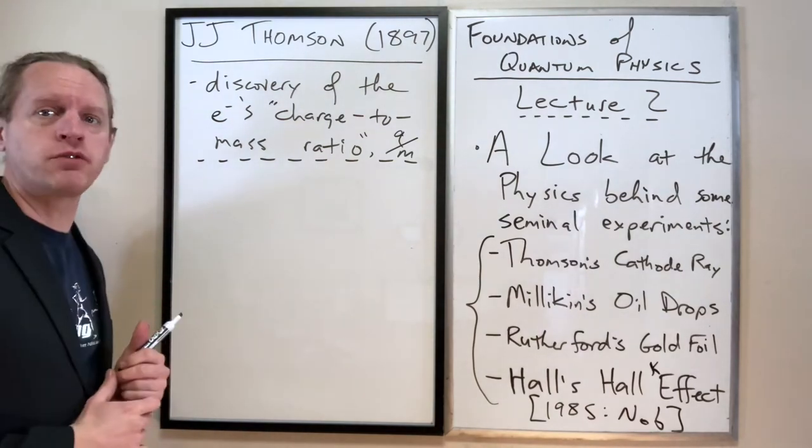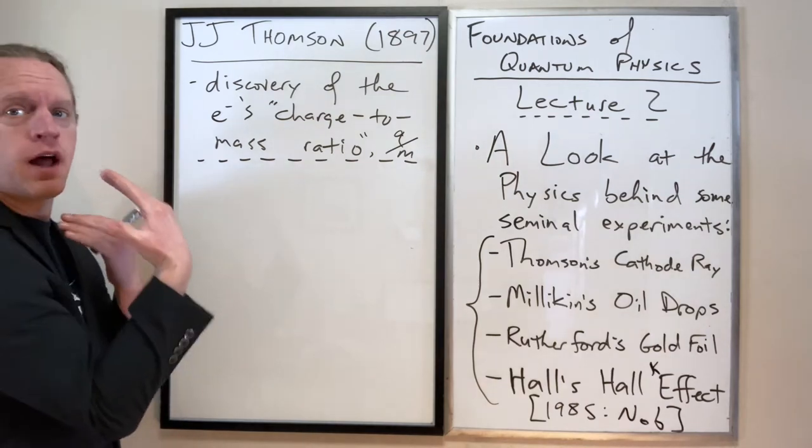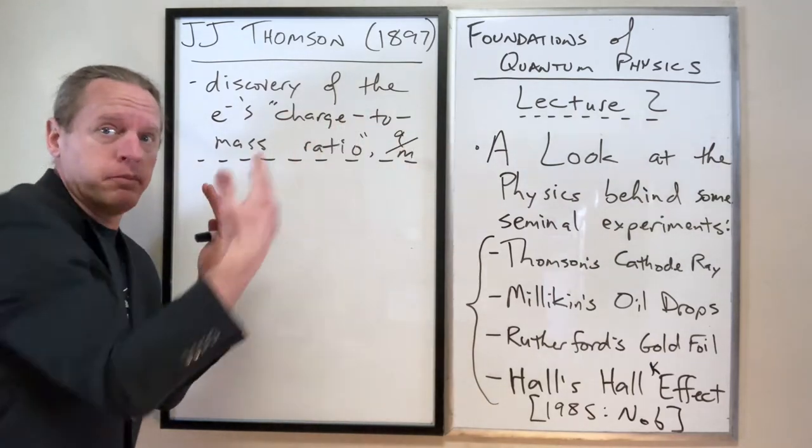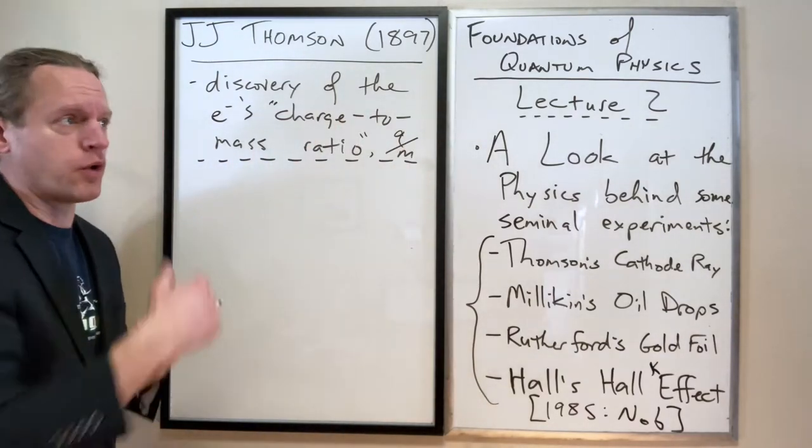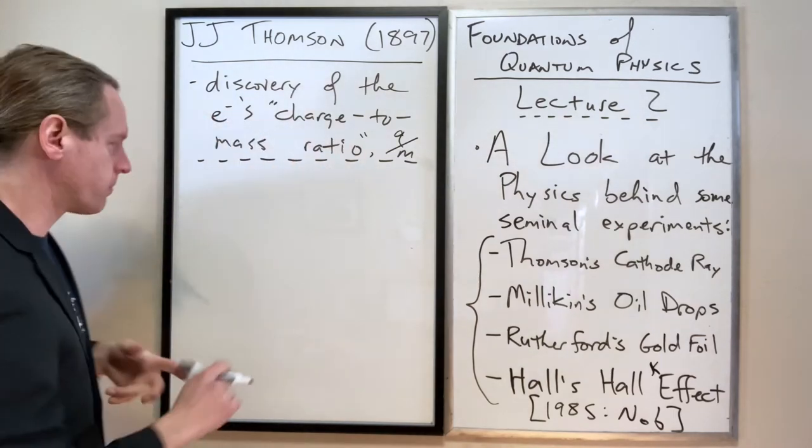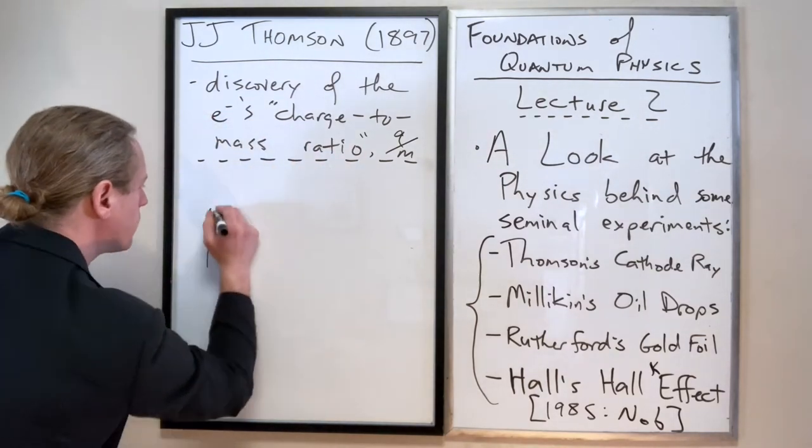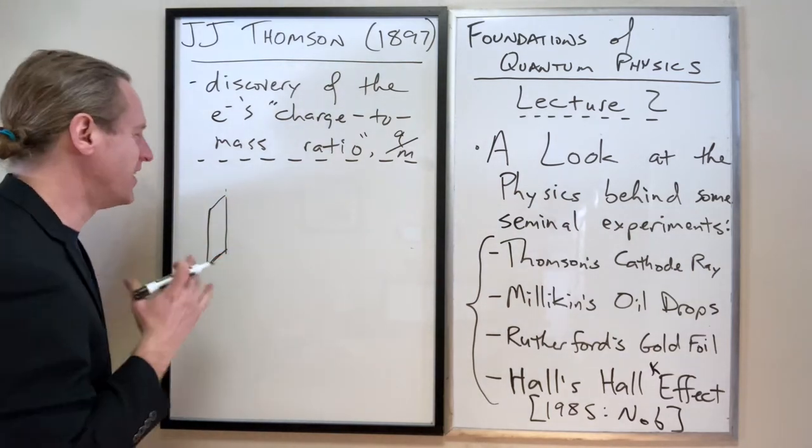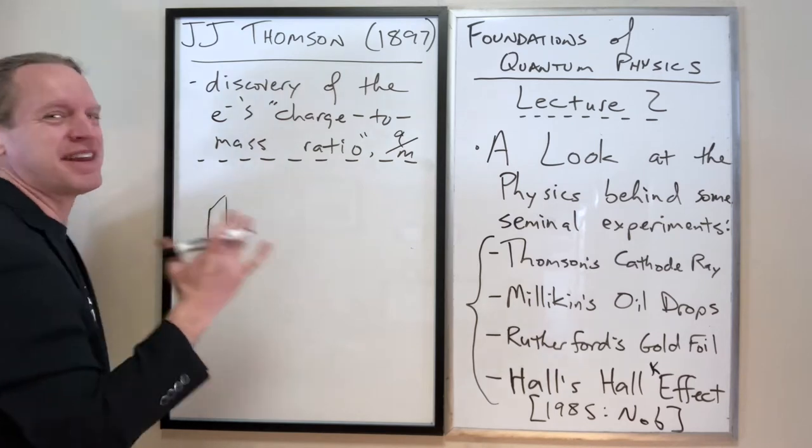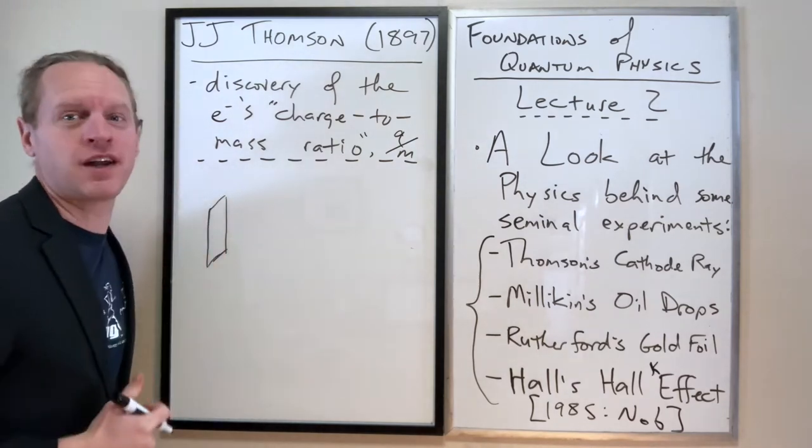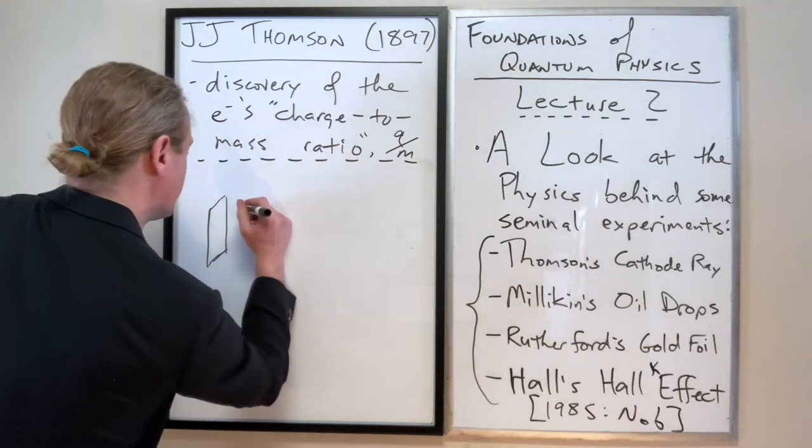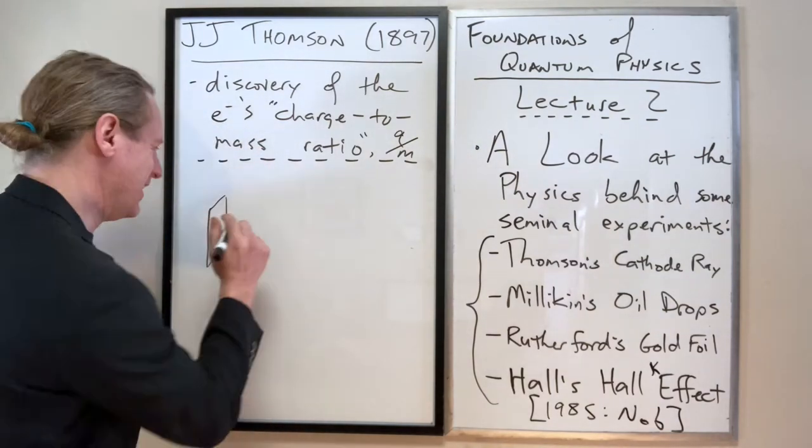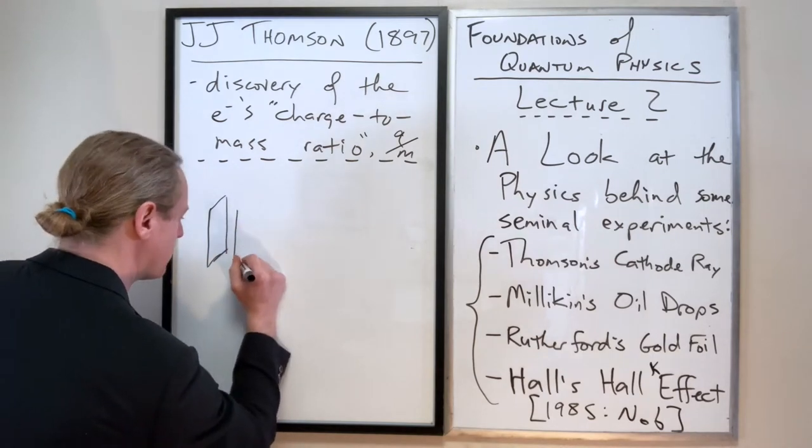The way that he did that was use what's called a cathode ray tube, where you apply a voltage between two plates, and the electrons start rushing from the negatively charged plate to the positively charged plate. I'm going to try to diagram that out. Keep in mind, I am absolutely not an experimental physicist. For the most part, whenever I walk into a lab room, everything breaks. Trust me with a blackboard and not a circuit breaker.